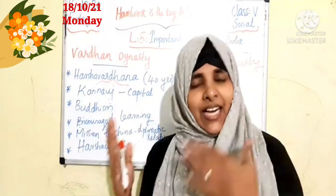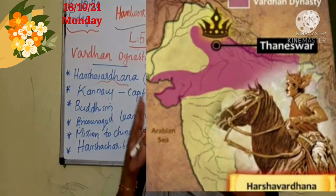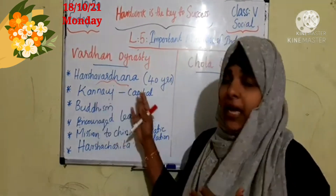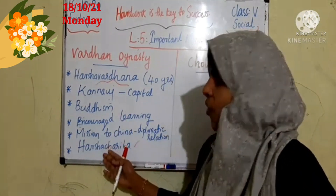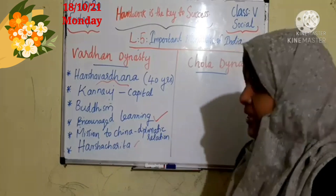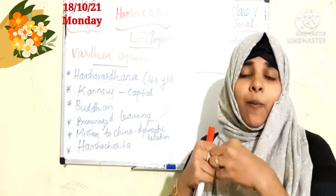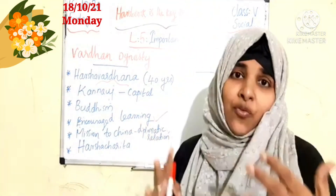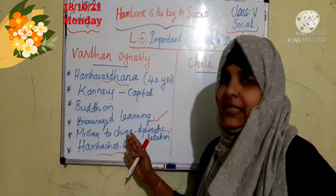So children, after the decline of the Gupta empire, Harshavardhana became the ruler of Vardhan dynasty. He ruled for 40 years and Kannauj was the capital of his kingdom. He encouraged learning and he built viharas. He also sent a mission to China to build a diplomatic relationship between China and India. His life account is recorded in the Harshacharita. These are the main important facts of Vardhan dynasty.